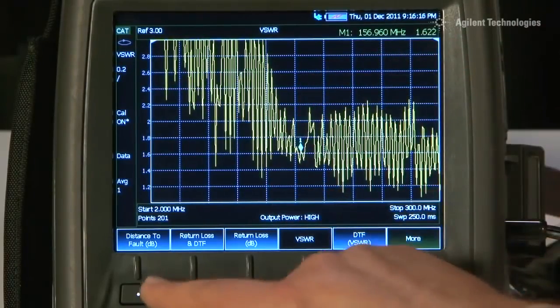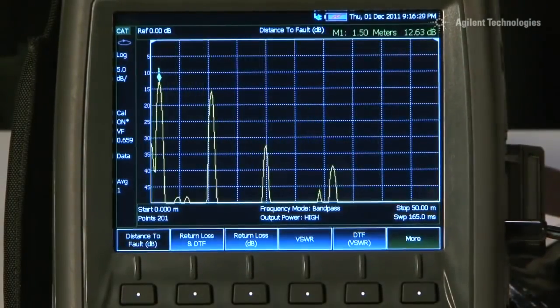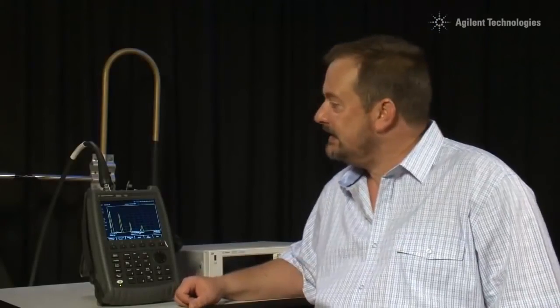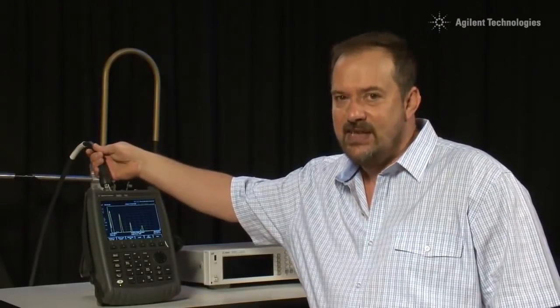And, if I look at the Distance to Fault, we can see why we are getting multiple reflections from various points down the cable. So how do we go about identifying whether it is the cable or the antenna that are at fault? Well, let us remove the cable from the measuring system and let us connect our fly lead directly to the antenna.